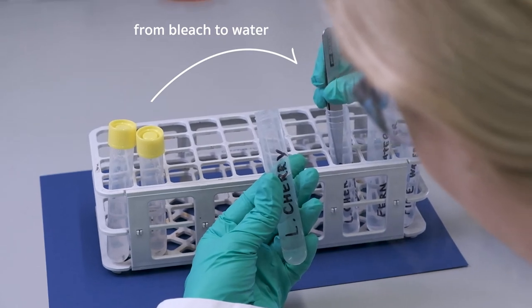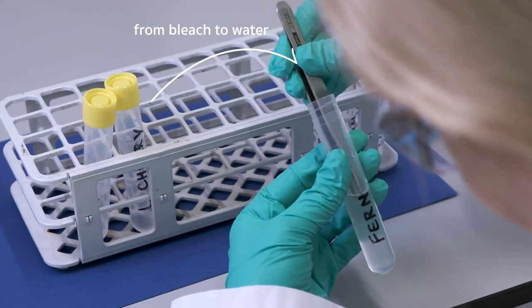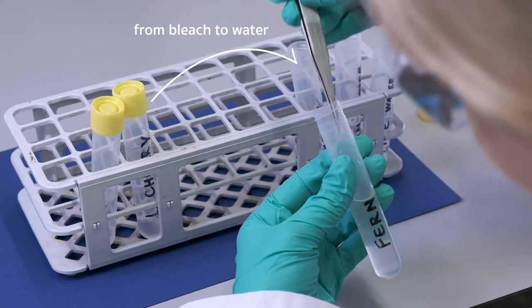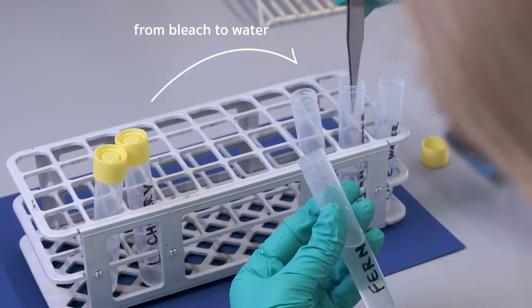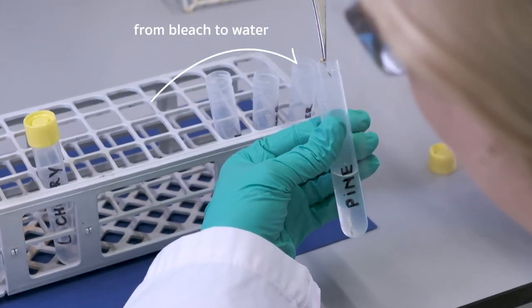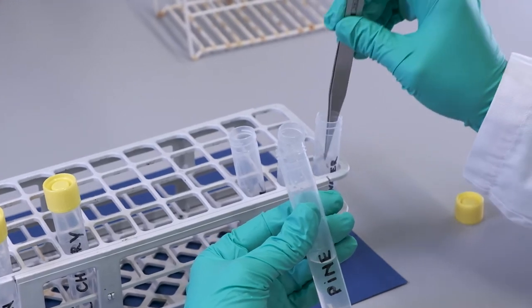Angiosperms, gymnosperms and ferns have very different shapes of their epidermal cells. You can also determine the species based on the shape of their epidermal cells.